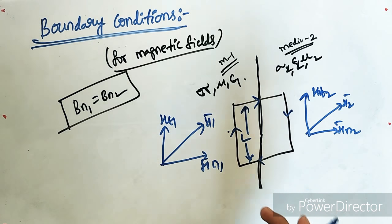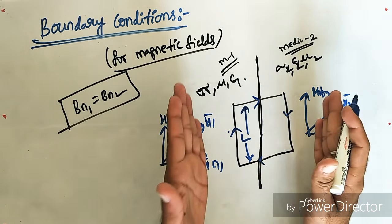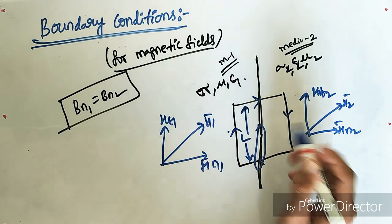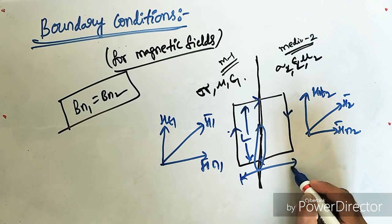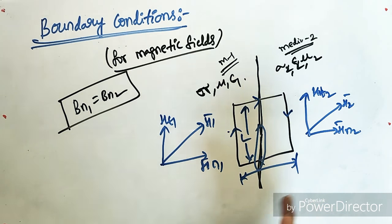If you clearly observe, we will obtain the boundary when we shrink this to this point. When we reduce this distance to 0, then we will get the boundary conditions.